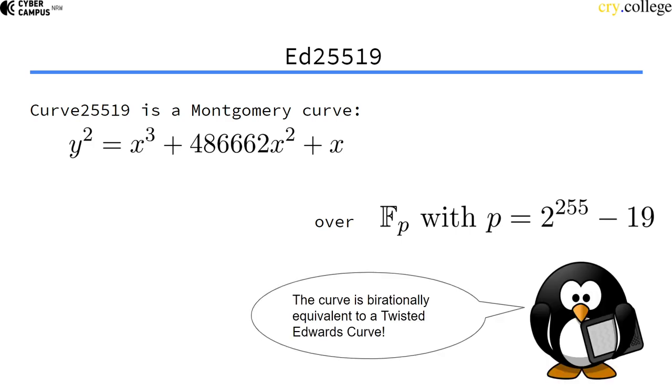Since this is a Montgomery curve, it is birationally equivalent to a twisted Edwards curve, right? So let's find this Edwards curve.